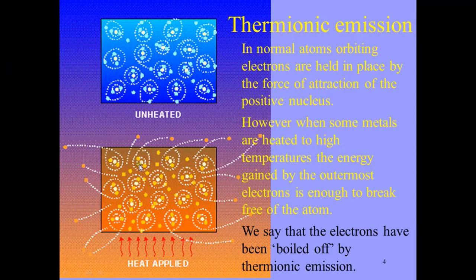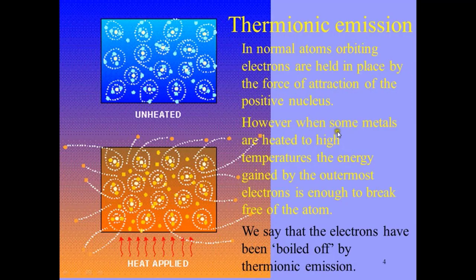We can use a high voltage instrument alongside a low voltage. We also look at what happens to electrons when they are unheated versus heated. In normal atoms, orbiting electrons are held in place by the force of attraction of the positive nucleus. However, when some metals are heated to high temperatures, the energy gained by the outermost electrons is enough to break free of the atom.